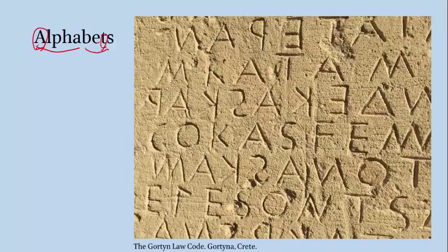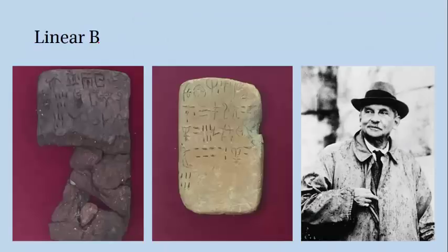But alphabets aren't the only kind of writing system out there, and that's important for our purposes, because the earliest system used to write Greek was not an alphabet. In fact, the earliest Greek text that we know of uses a writing system called Linear B. Linear B was used by an early Greek people whom we refer to collectively as Mycenaeans, and the earliest examples that we have date to the 15th century BC.